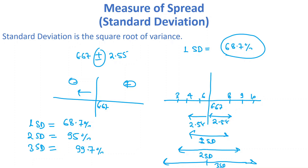By using these three standard deviations, we can know how far our data is from the mean. If we use three standard deviations, we can include around 99.7 percent of total data — meaning 99.7 percent of data can be measured in terms of how far it is from your mean.